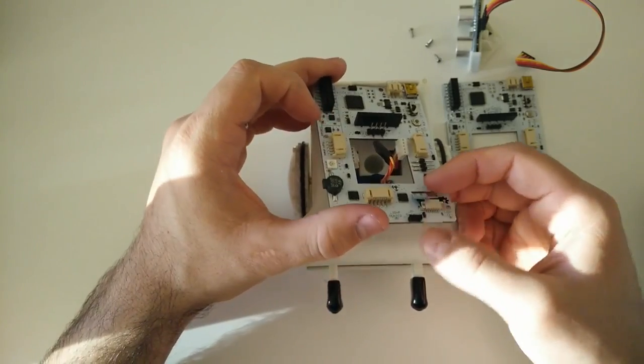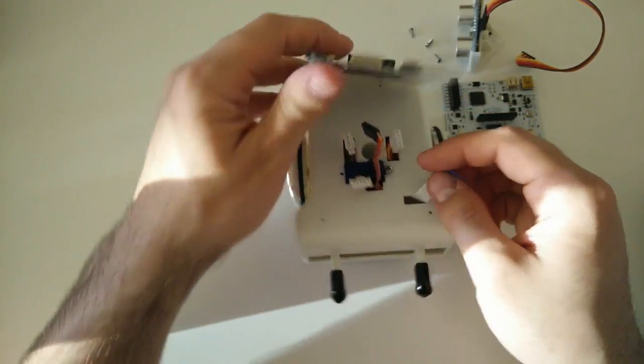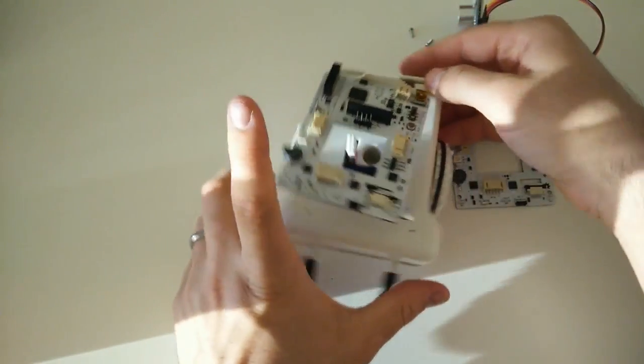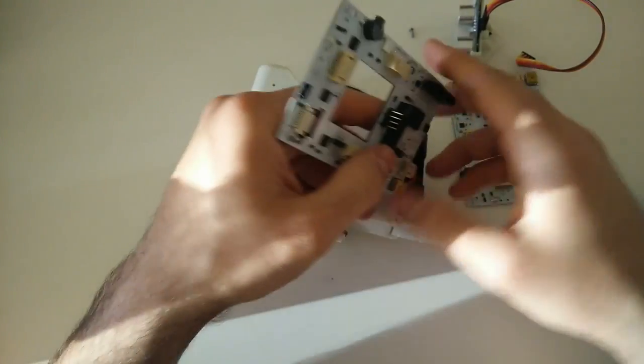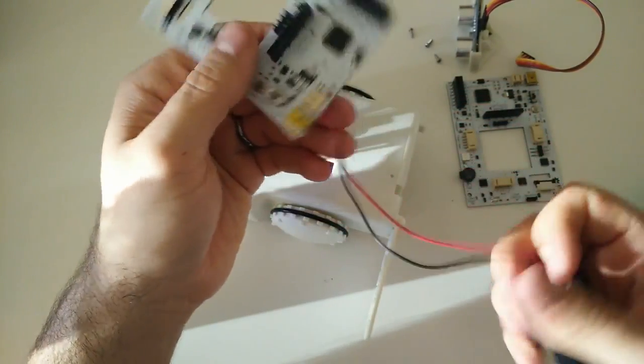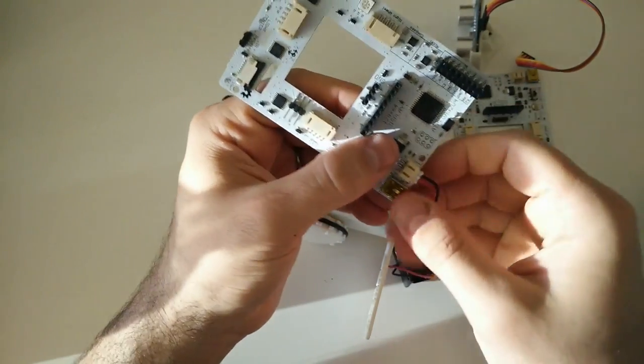The board should come off fairly easily now. The only thing holding it now is the battery connector, so we're going to pop open the battery door and take out the battery case. If you're going to be tempted to tug it right out, don't do that.